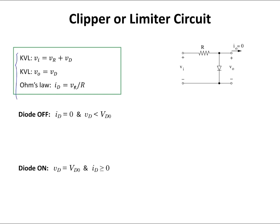Here are the KVL equations I wrote for this circuit and the Ohm's law for the voltage across the resistor. VR is the voltage across the resistor, and VD is the voltage across the diode. Using KVL in the main loop: VI = VR + VD. Another KVL gives me: −Vout + VD = 0, which tells me that Vout = VD. Ohm's law for the voltage across the resistor is also provided.